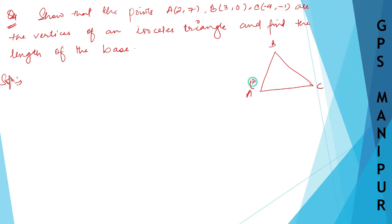A is (2,7), B is (3,0), and C is (-4,-1). Something like this. You have a triangle, an isosceles triangle.